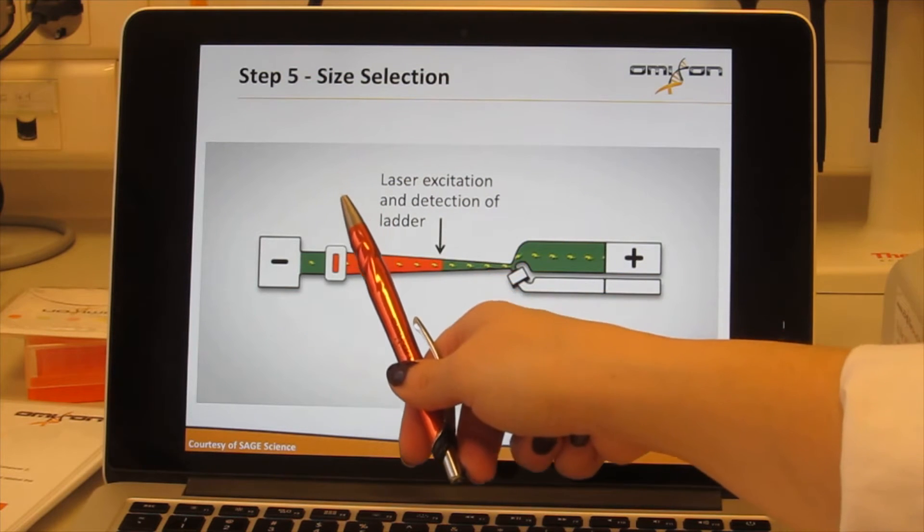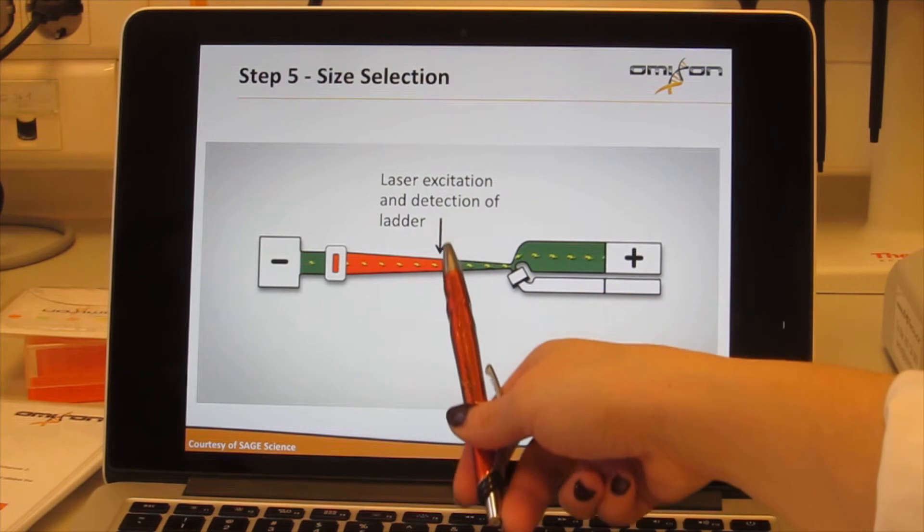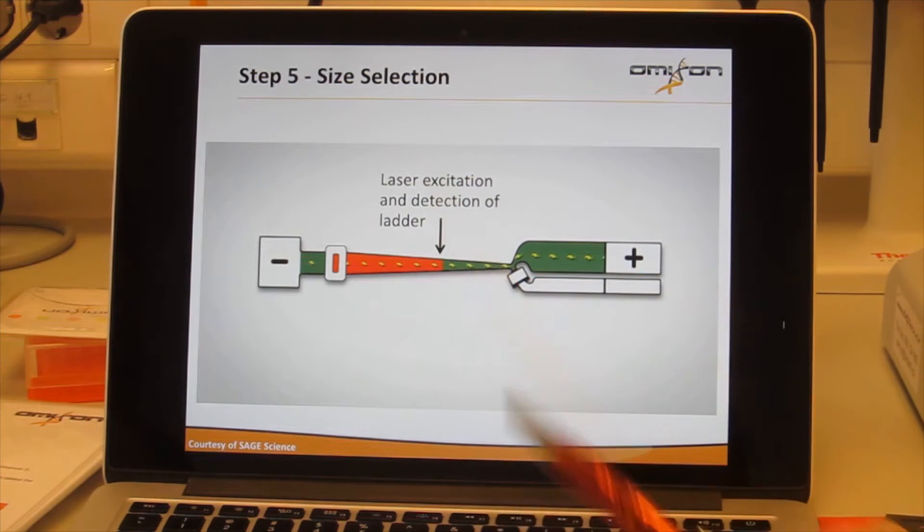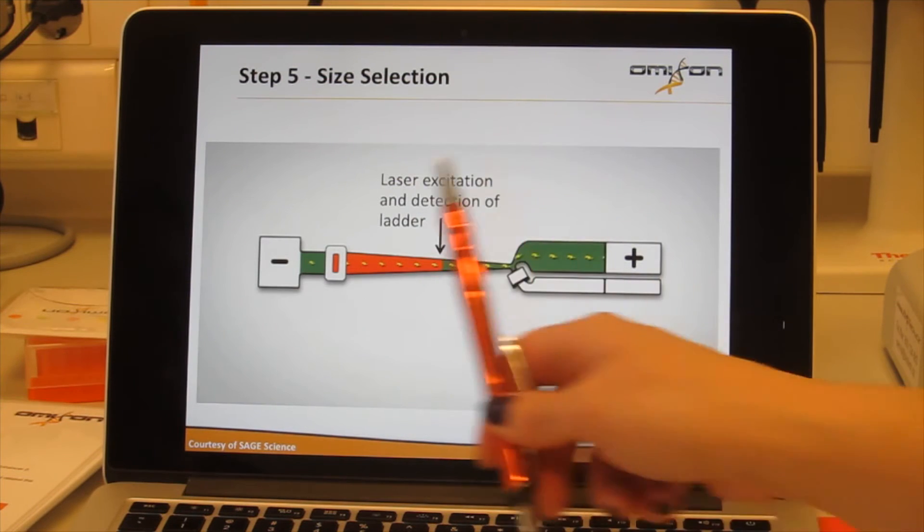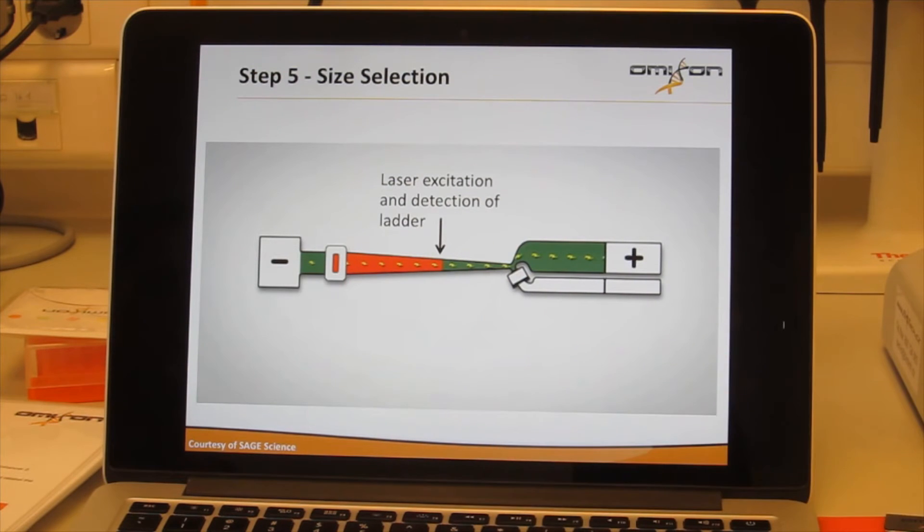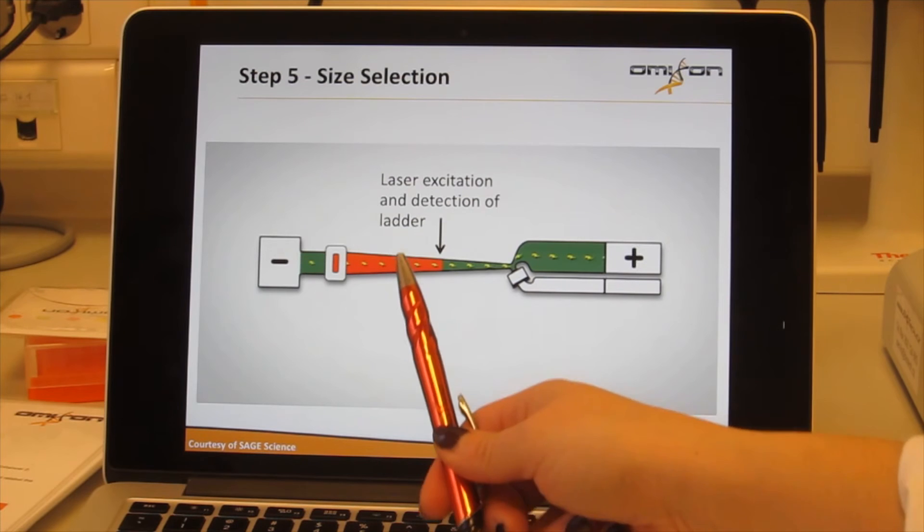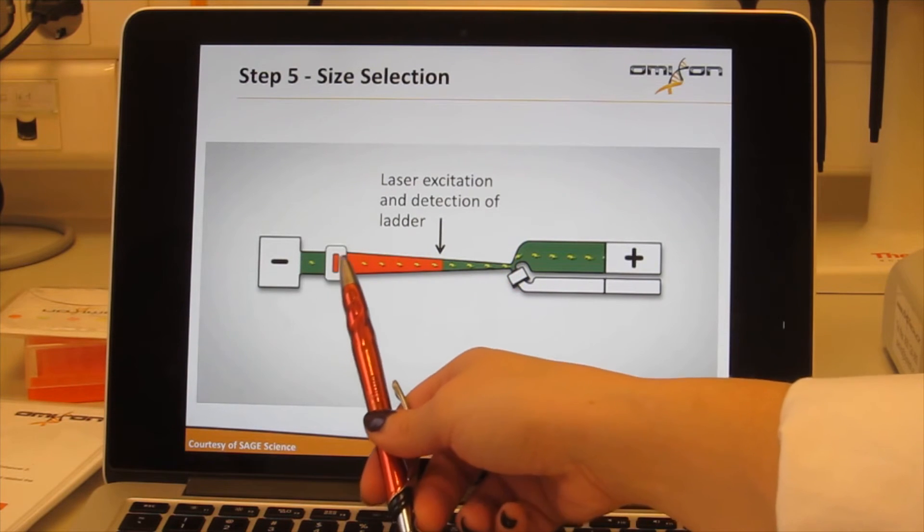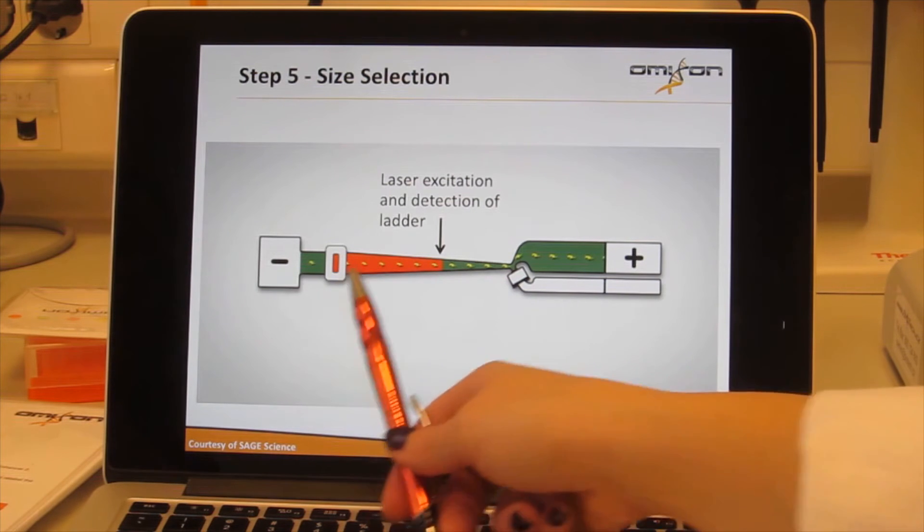As the markers are smaller fragments and they start migrating first, they will be detected by a laser point approximately at this point first. So the 50 base pair fragment will be detected first and then the machine will calculate how much time it took for the 50 base pair fragment to go from this point to this point. Then the 150 base pair marker will be detected second and the machine will do a similar calculation.